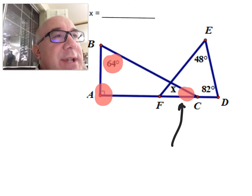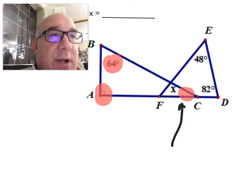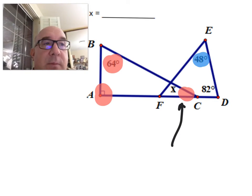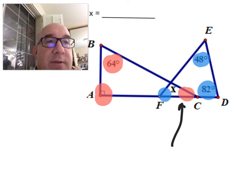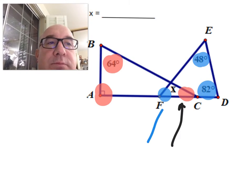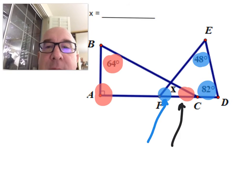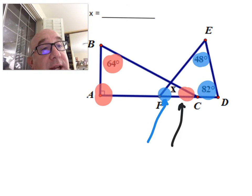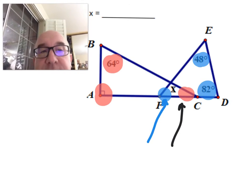You can do the same thing with the other triangle as well. So the 48, the 82, and you can find that angle down there. So likewise, this little blue angle here can be found if you take 180, subtract 82 and 48.